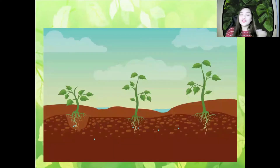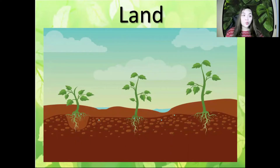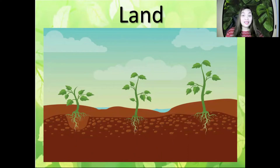The first habitat is Land. Can everybody say Land? Let's spell it together: L-A-N-D. Land. What is it? It is Land.